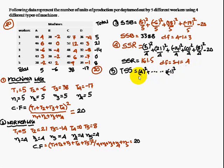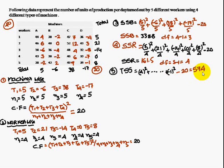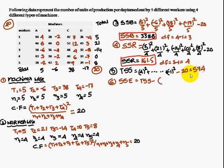Next, find the total sum of squares (TSS): sum all squared coded values — 4² + 6² and so on up to (-1)² — then subtract the correction factor. This gives TSS = 574.